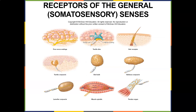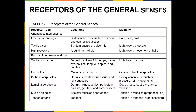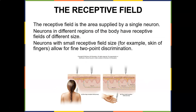Here's what they look like: free nerve endings, tactile disc, hair receptor, tactile corpuscles. I probably won't ask what they look like, but it's always good to go back to the table and see what their modality — what they do — is the best thing.